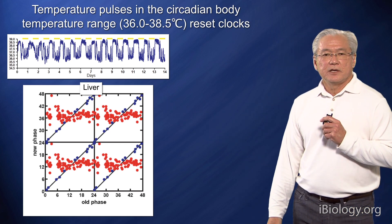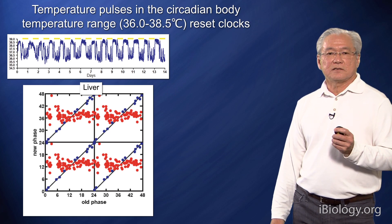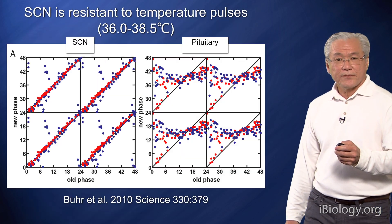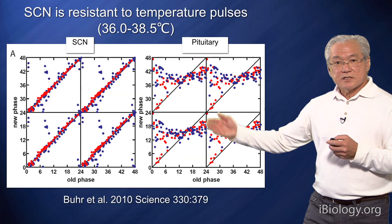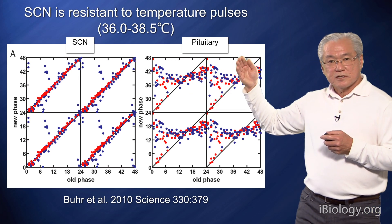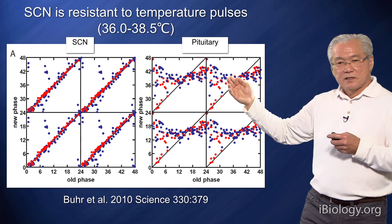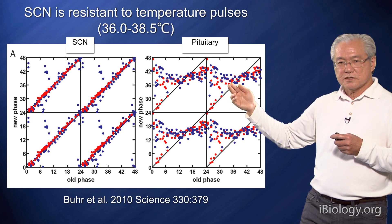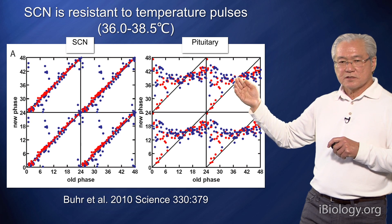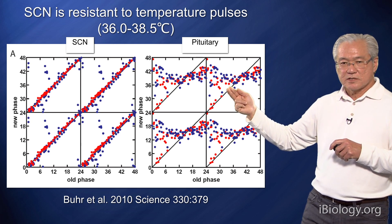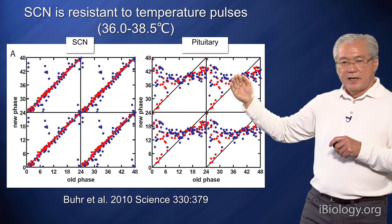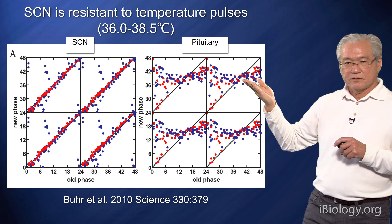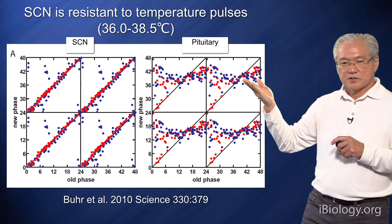So temperature turns out to be a very strong signal to peripheral clocks, such as those found in the liver. In another set of experiments using the pituitary gland, the blue and red dots indicate different duration temperature pulses — blue dots are one-hour pulses and red dots are six-hour pulses. The pituitary shows strong resetting; the slope of these data is zero.